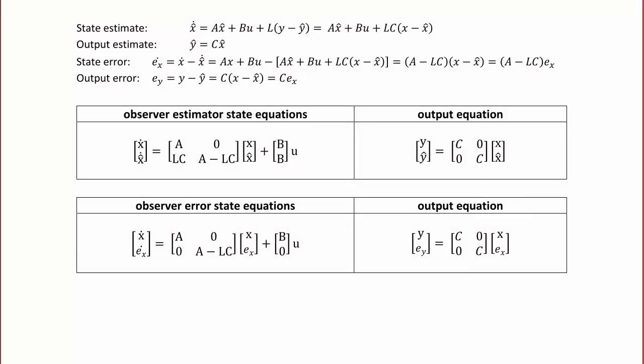We will use the following equations for this design. The first one is the state estimate: x-hat-dot equals A*x-hat plus B*u plus L times (y minus y-hat), which equals A*x-hat plus B*u plus L*C times (x minus x-hat). The output estimate is y-hat equals C*x-hat.